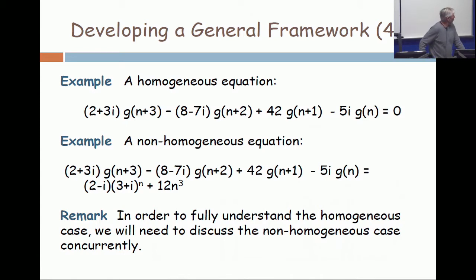Now look at the second one. It's the same equation, except on the right-hand side, I now have two minus i times three plus i to the n, plus 12n cubed. So outside the g terms, I have a non-zero expression on the right-hand side of the equation. That's non-homogeneous.